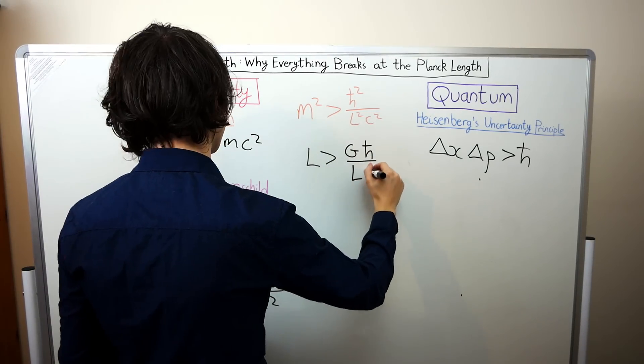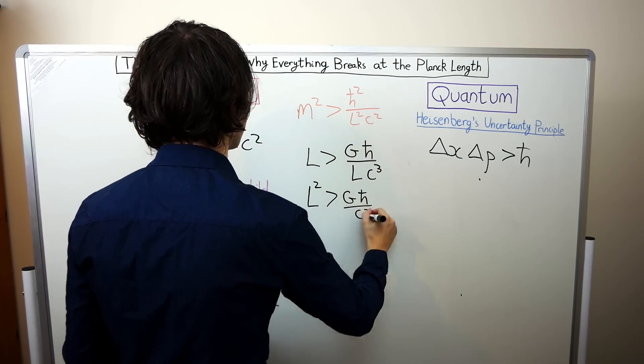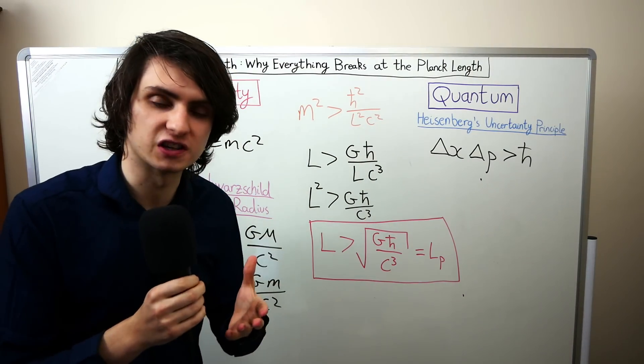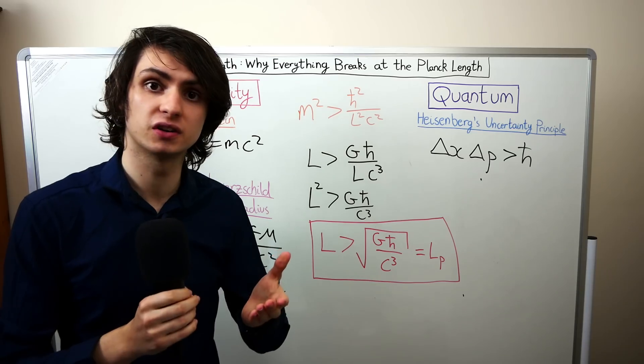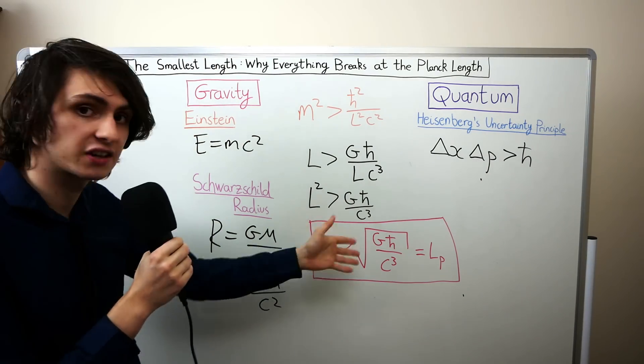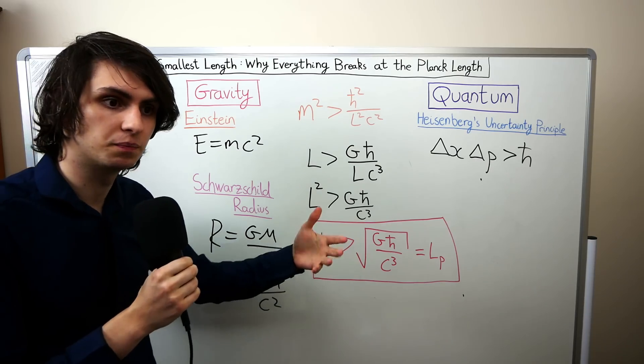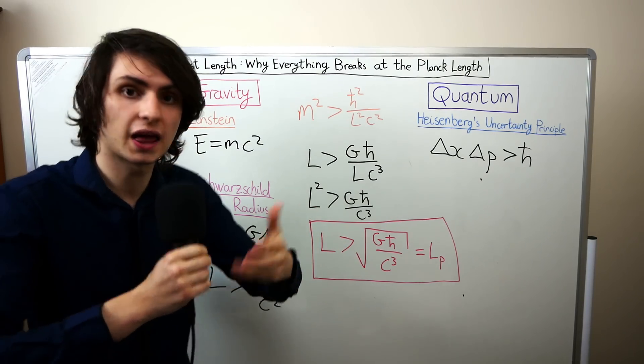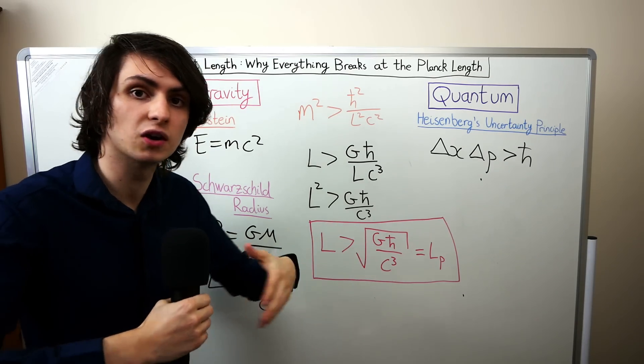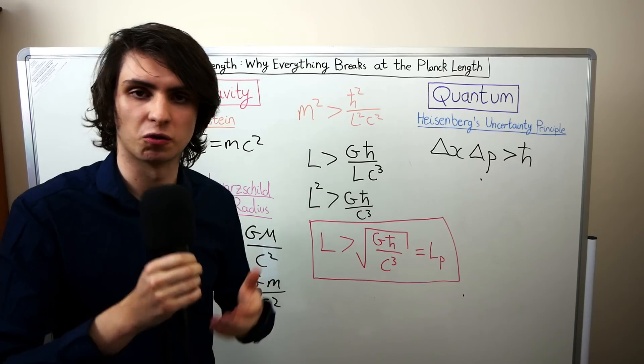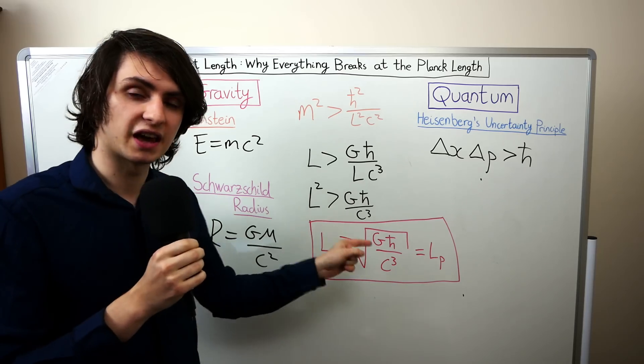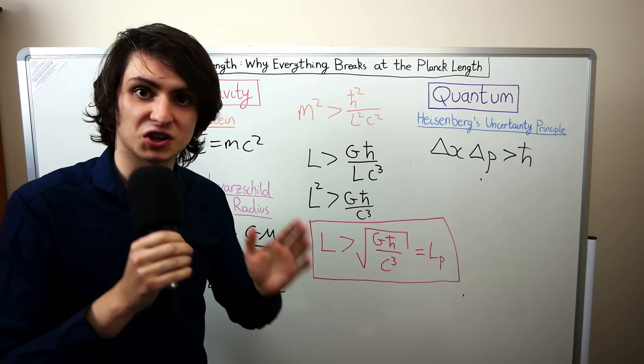After doing some algebra we end up with a remarkable result. If we want to do physics with a particle in a small region then there's a lower bound on the size of it. We can't do physics at length scales less than this quantity because below this length particles collapse into their own black holes and so regions of this size will be obscured, hidden behind the event horizon of a black hole. This here is the Planck length. Below this length all of our physics just breaks.